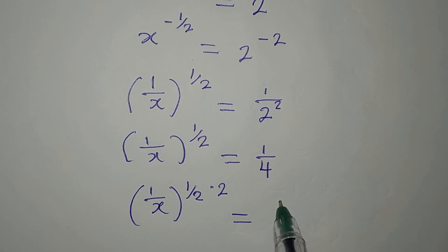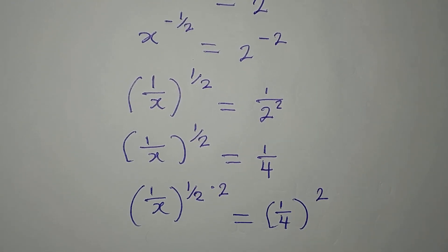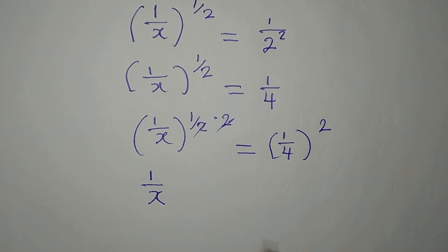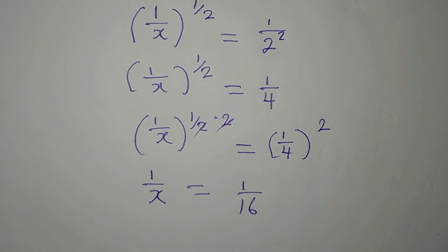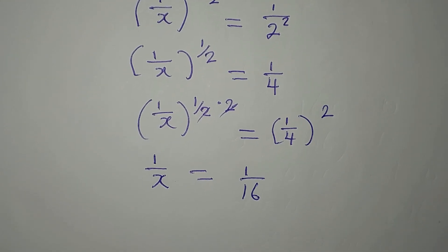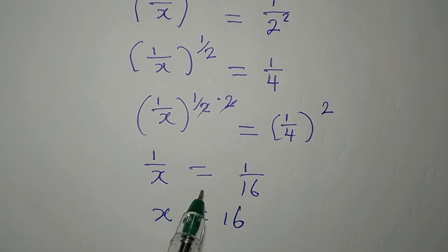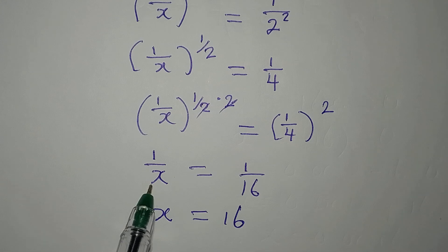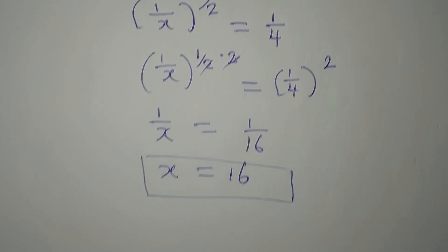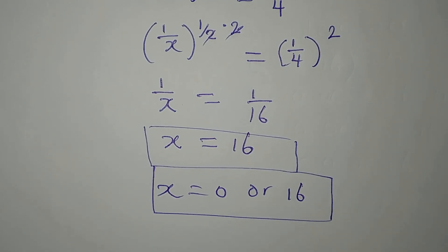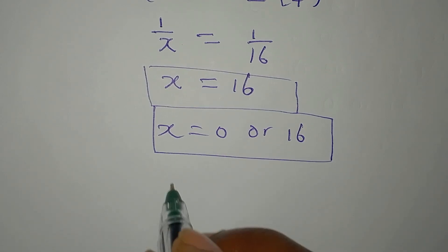Squaring the right side gives 1 over 16. So we have 1 over x equals 1 over 16. Since both sides have the same numerator and are equal, the denominators must be equal, so x equals 16. The first method gave us x equals 0 or 16, while the second method gave only x equals 16.